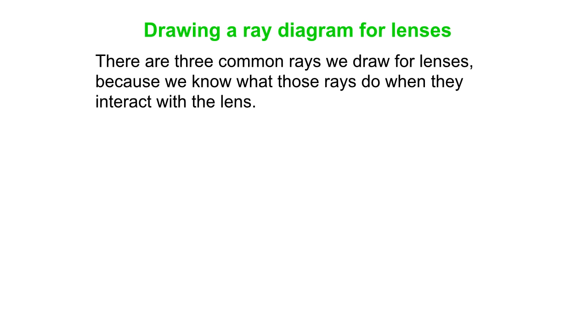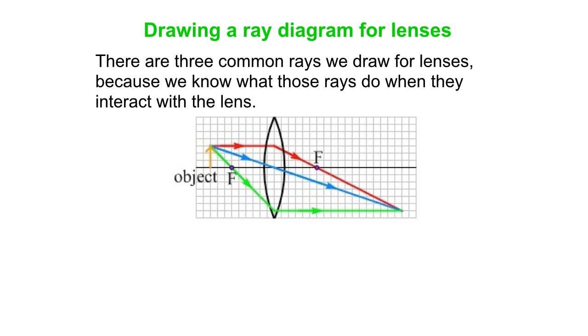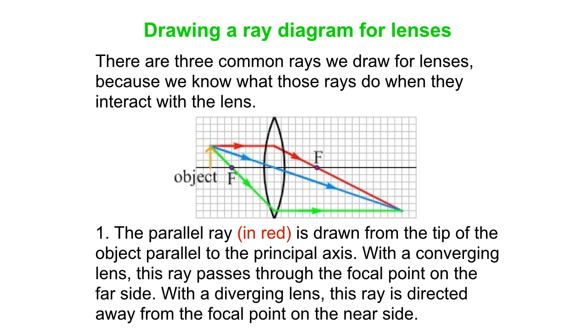So let's go over drawing a ray diagram. Three rays we often draw for lenses. They're shown here. The first one in red is what we call the parallel ray. It goes from the tip of the object parallel to the principal axis. The principal axis is that black line that bisects the lens. And then, if it's a converging lens, that ray passes through the focal point on the far side. If it's a diverging lens, it goes away from the focal point on the left-hand side.